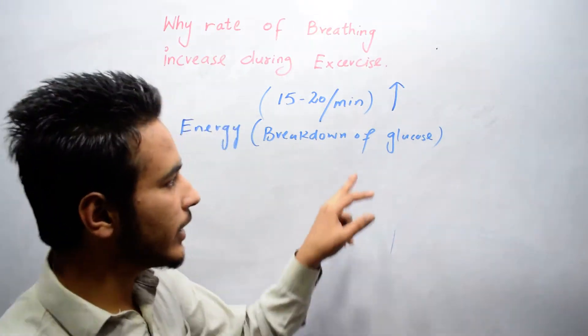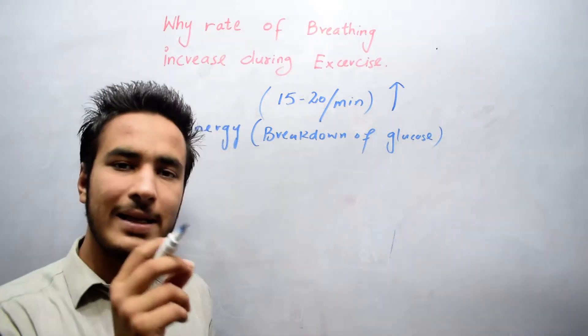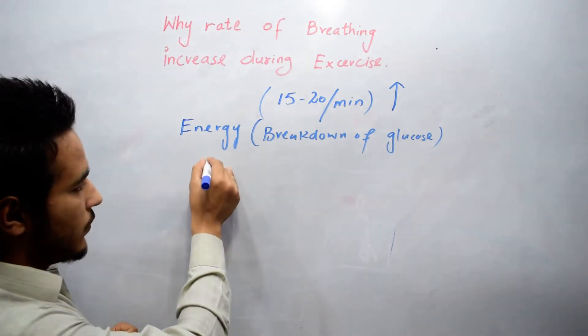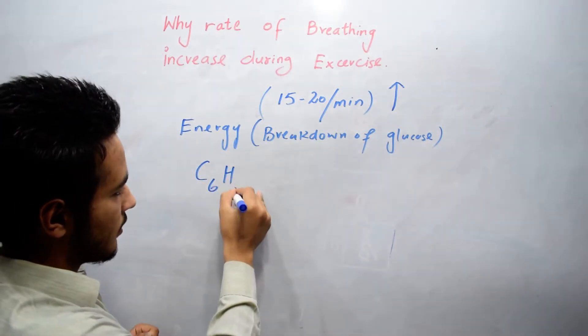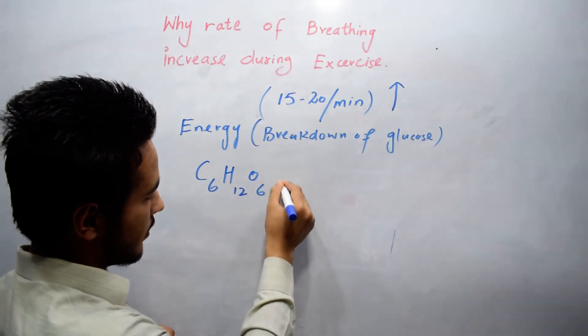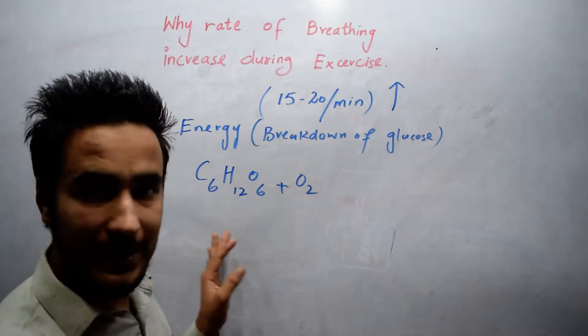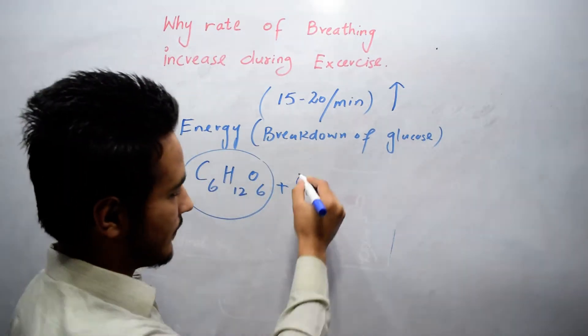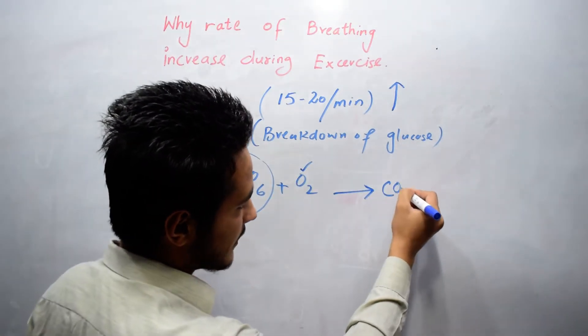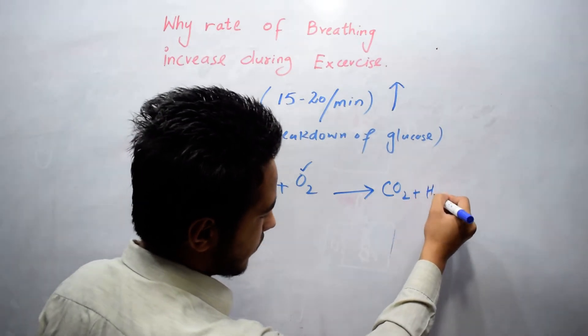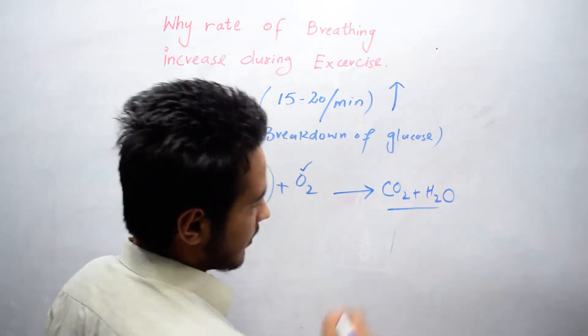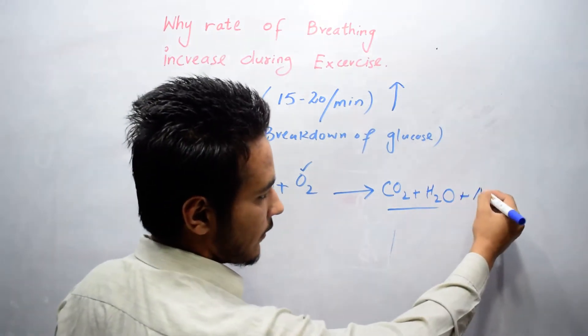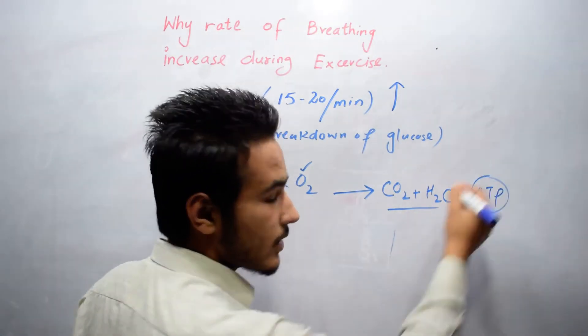We know that for respiration oxygen is required. The reaction is: glucose plus oxygen. For this breakdown of glucose we need oxygen. This gives us carbon dioxide plus H2O, and produces energy in the form of ATP. This energy we can use.